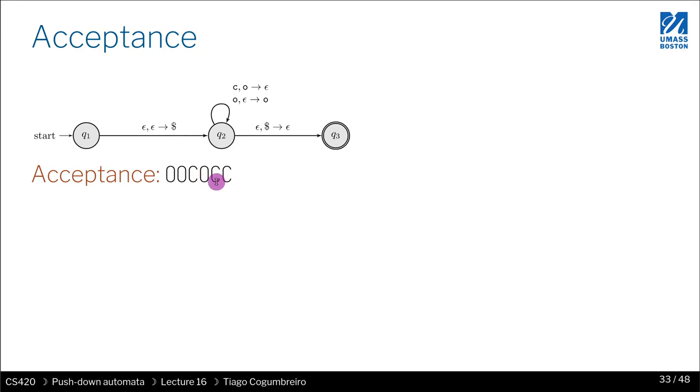This would match this, and then another open, so now I have two opens, then close and close again. This should be accepted. So let's see: we open once, we open twice - now we have two O's on the stack - then we close once, so now we have one O on the stack.